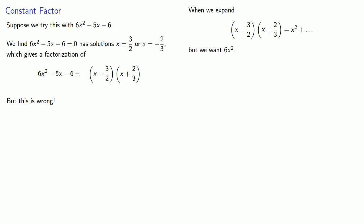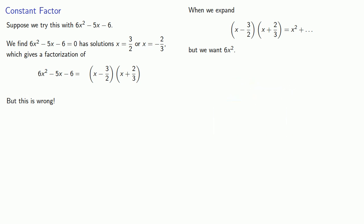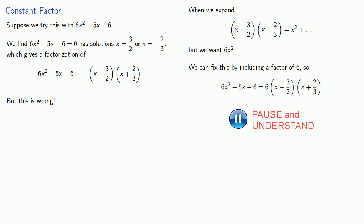So what can we do? Well, here it's useful to keep in mind an important idea. It doesn't matter what you write down first. Fix things as you go along. And so the problem here is that I get an x squared, but I want a 6x squared. And so we can fix this by including a factor of 6. So in our factorization, we'll want to include that factor of 6. And that fixes our problem.